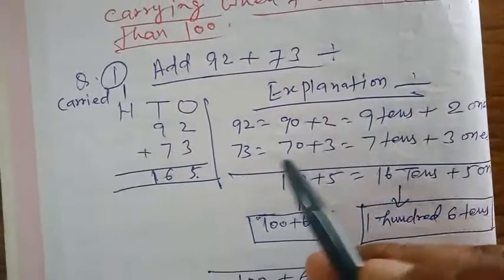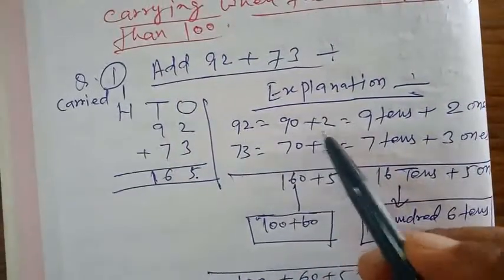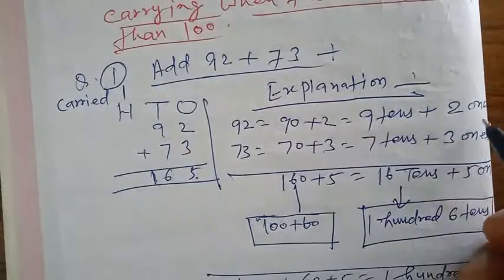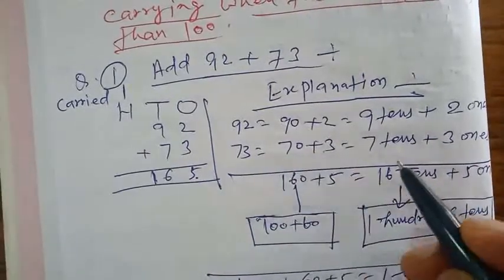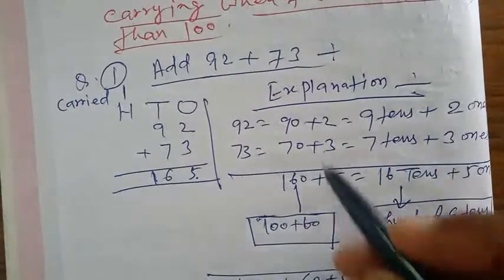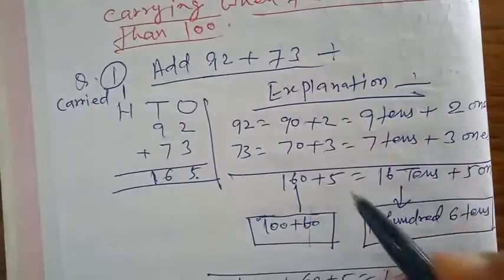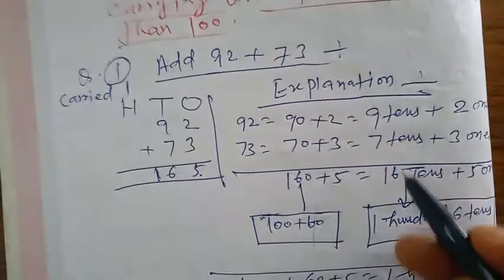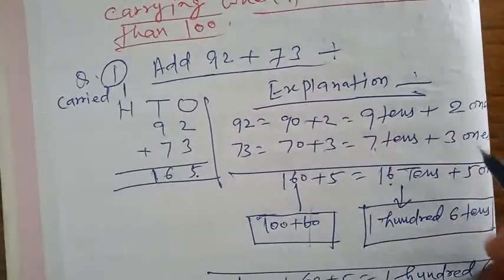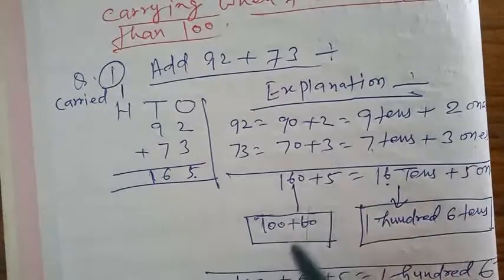We can write this as 90 plus 2, and 73 as 70 plus 3. Now add left hand and right hand: 2 plus 3 equals 5, and 90 plus 70 equals 160.